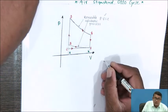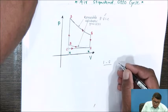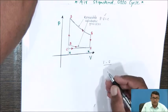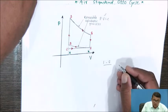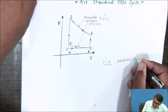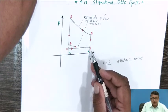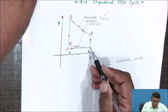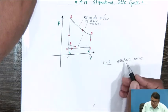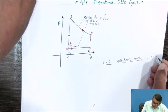Process 1 to 2 is an adiabatic process — specifically a compression process, also called an isentropic process. The air sucked in from 0 to 1 gets compressed, moving from volume V1 to V2, and the temperature increases. This process obeys the gas law: P × V raised to gamma equals constant.